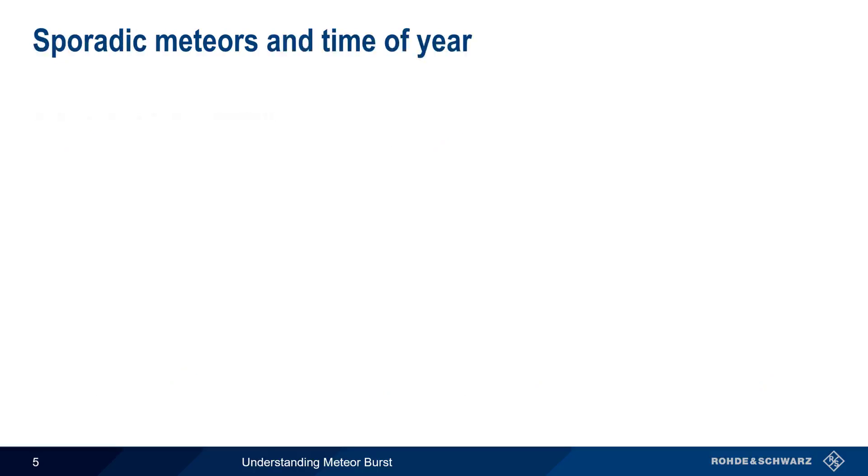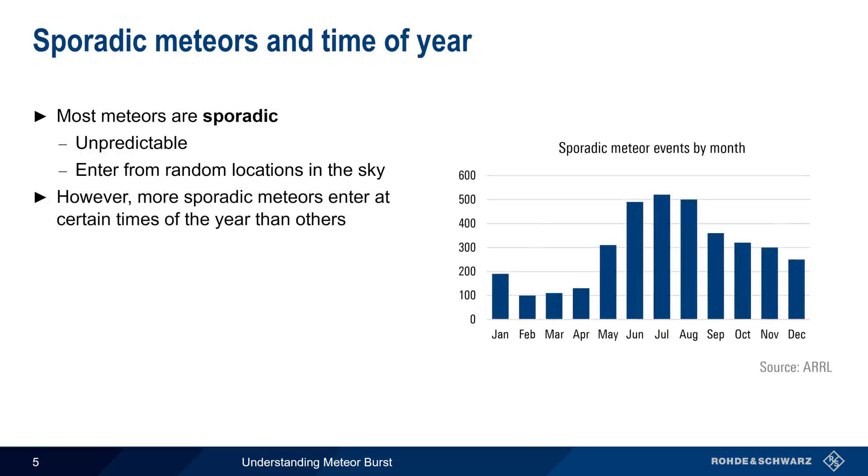The vast majority of meteors are sporadic, which means there is no way to predict precisely when or where they appear, and they enter the atmosphere from random locations in the sky. The quantity of sporadic meteors does however vary in a somewhat predictable way during the course of a year. Generally, the greatest number of sporadic meteors enter during the months of June through August, and the least number enter the Earth's atmosphere during the months of February and March.